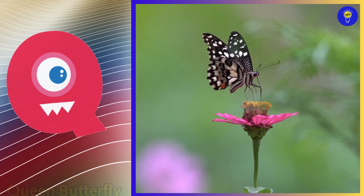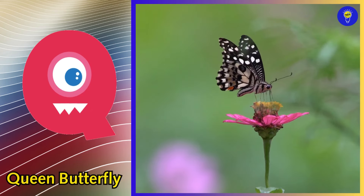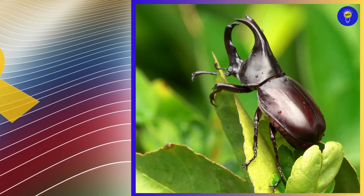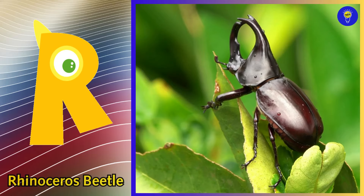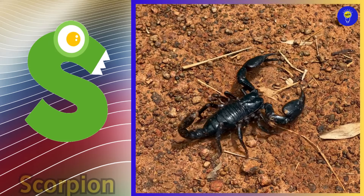Q is for queen butterfly, qu, qu, queen butterfly. R is for rhinoceros beetle, r, r, rhinoceros beetle.